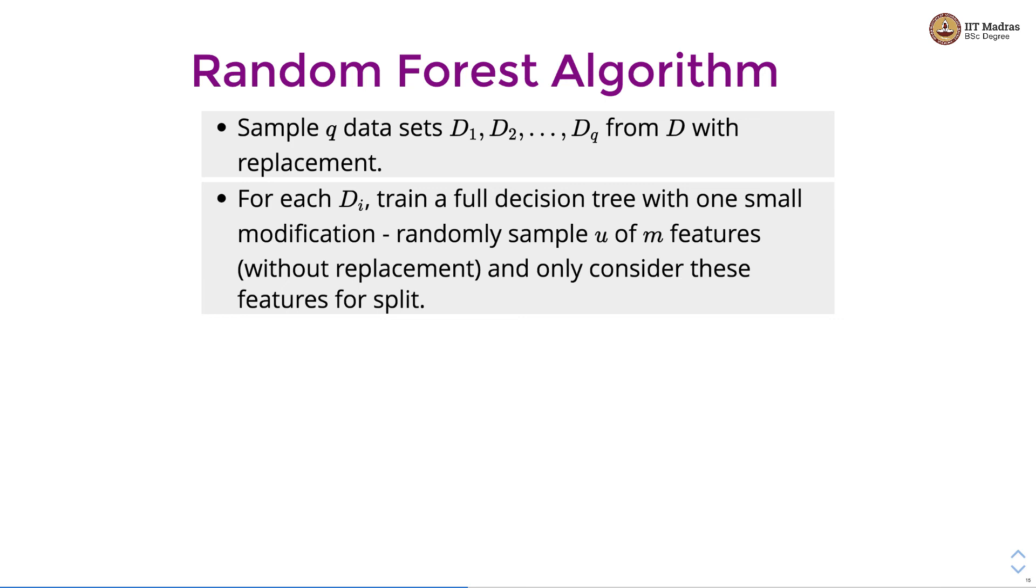While deciding the features for split, we sample u of m features without replacement randomly and only consider those u features for split. And we get the final classifier which is the average of the predictions that we get from q different trees.